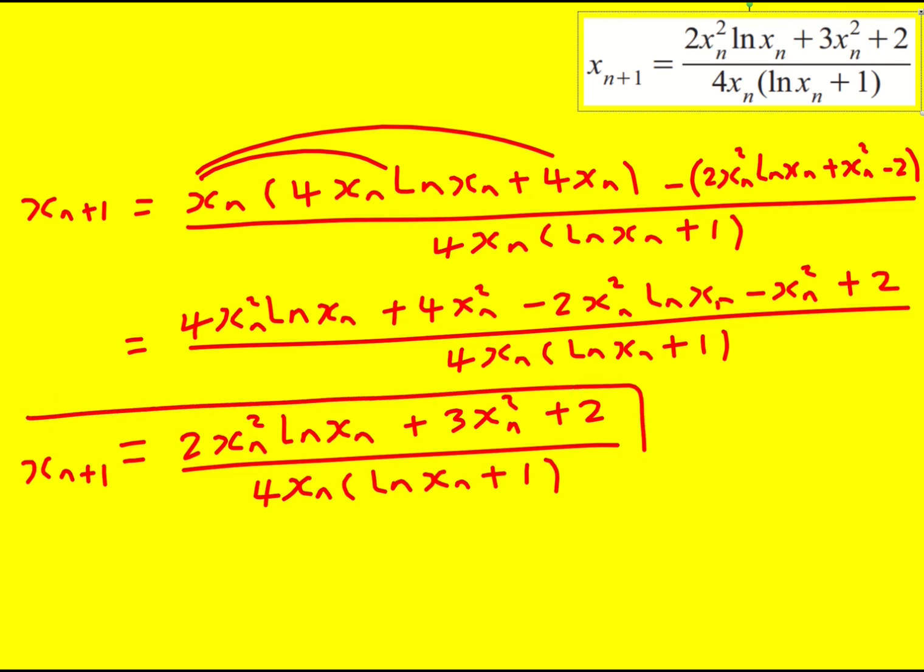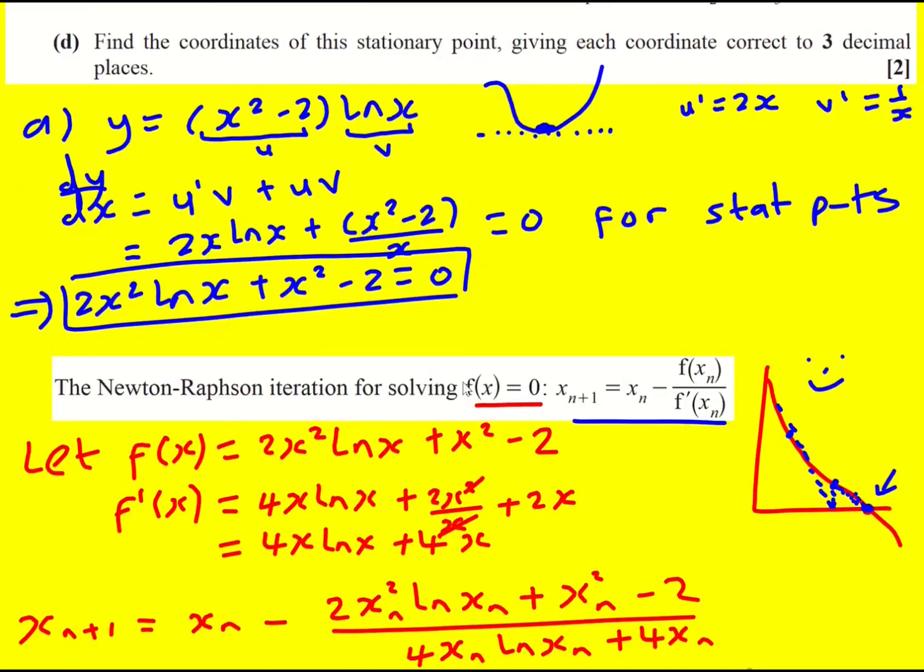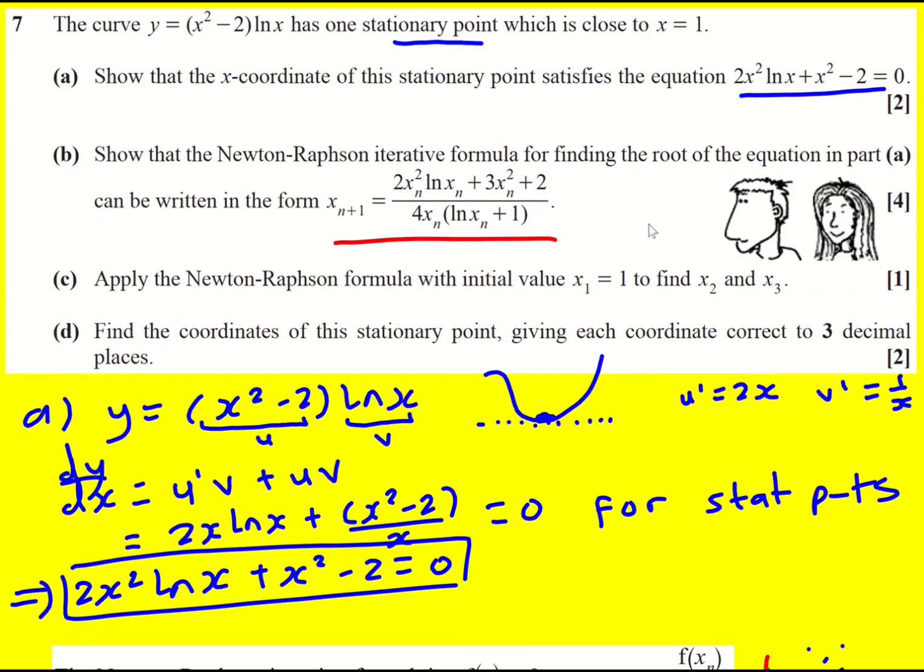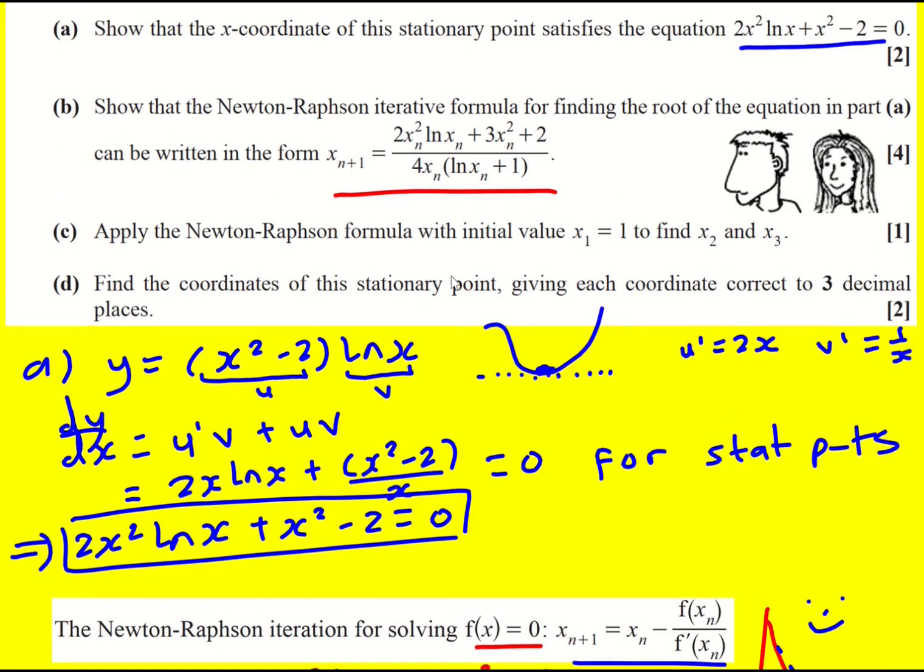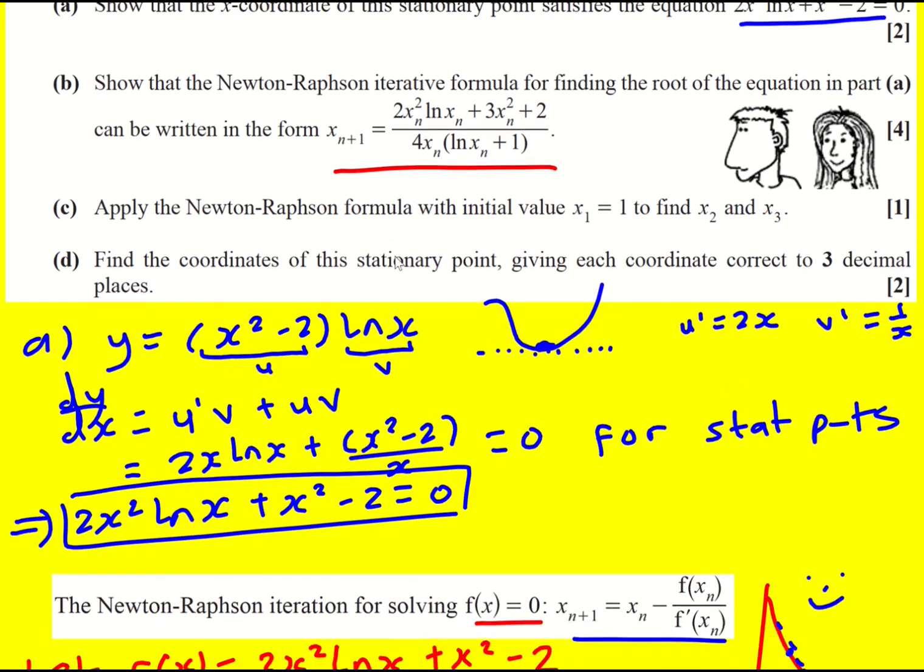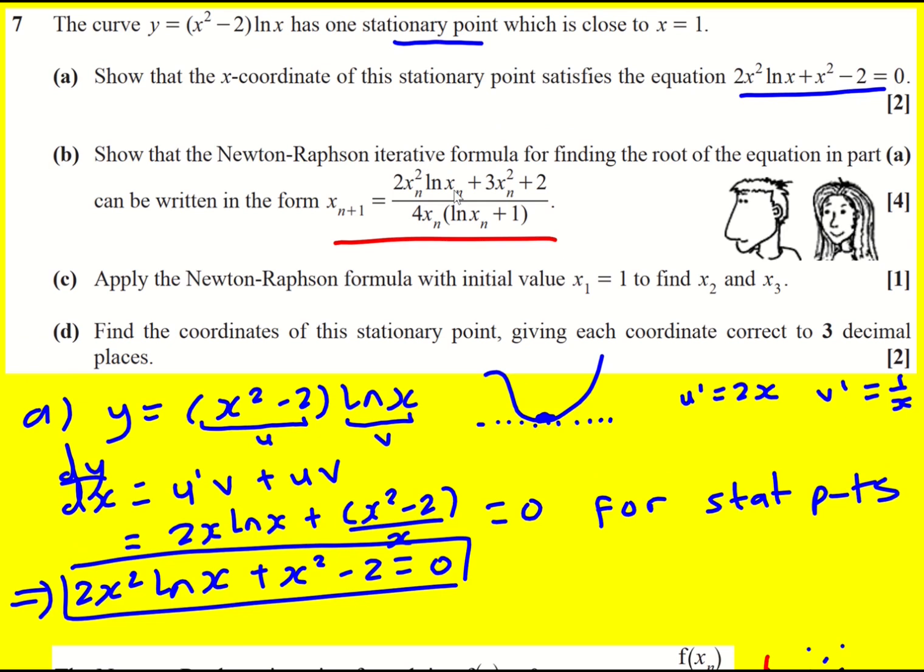Nice. So let's just recap. We've differentiated a function and then set it equal to zero to look at the stationary point. We've rearranged that equation to set it equal to zero. And then that is the function which we called f of x that we want to solve. The Newton-Raphson iterative formula allows you to solve that. So we've basically substituted our function and its derivative into that, rearranged it, and it's given us this formula here.